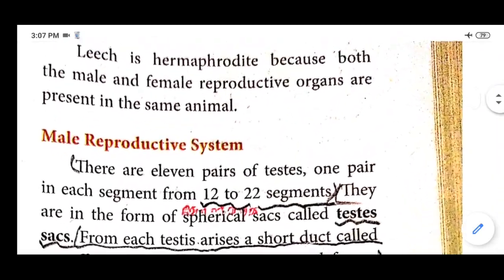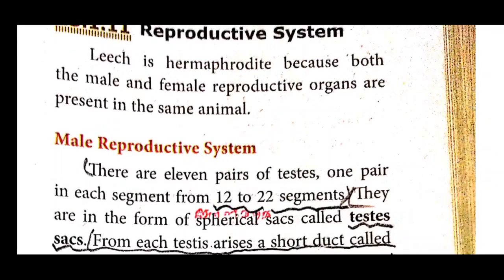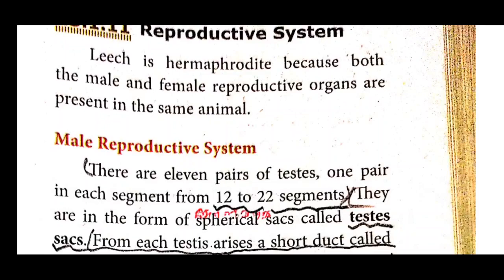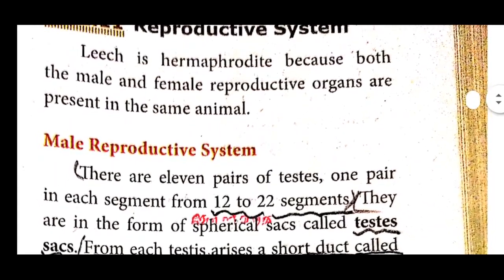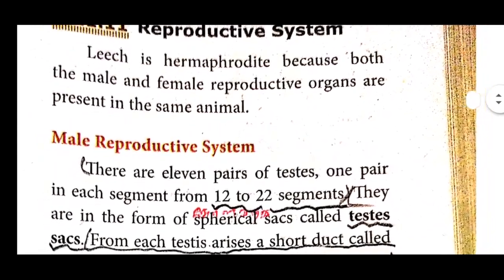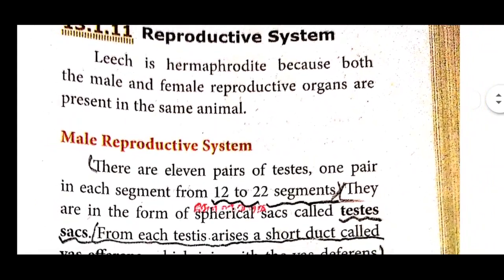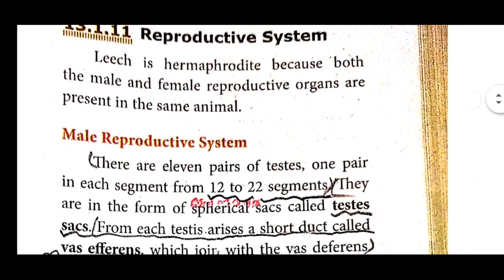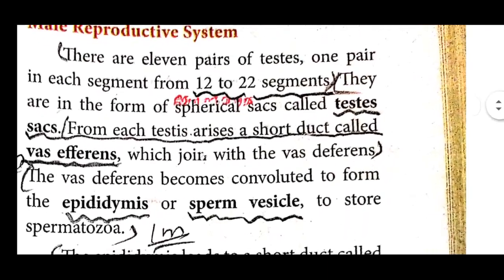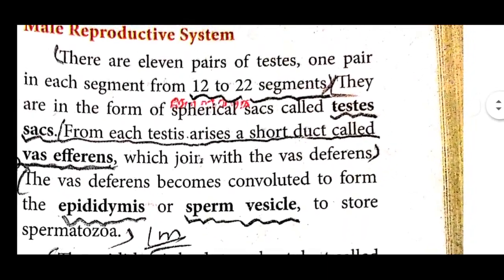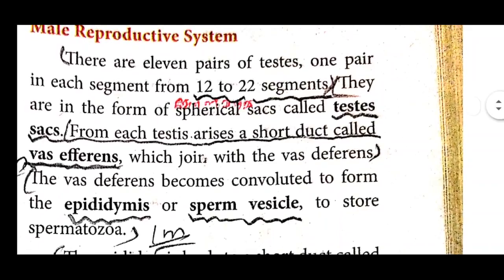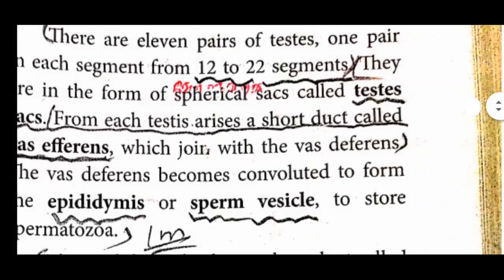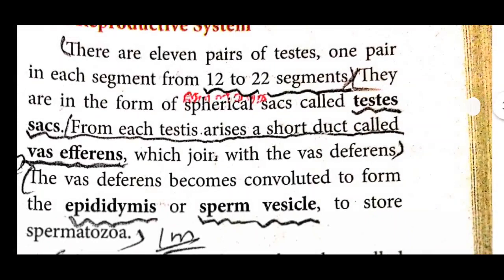The leech is hermaphrodite because both the male and female reproductive organs are present in the same animal. The first one is the male reproductive system. There are 11 pairs of testes, one pair in each segment from segment 12 to segment 22. They are in the form of spherical sacs called testes sacs.